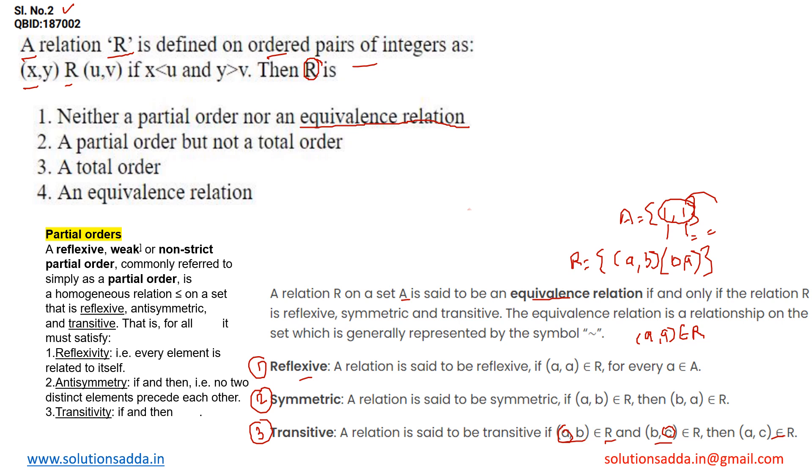So according to our question, there is a relation between X and Y related with U and V. In order to satisfy the reflexive property of an equivalence relation, we know that the value of X and U should be the same. When X and U values are equal, then we say this relation satisfies the reflexive property and comes under the equivalence relation.